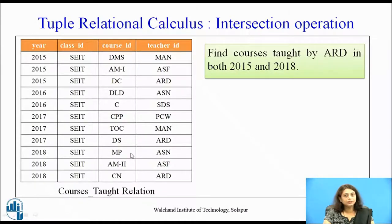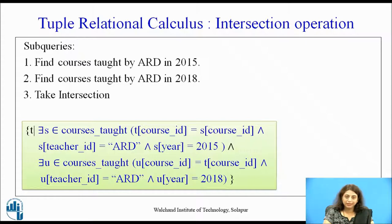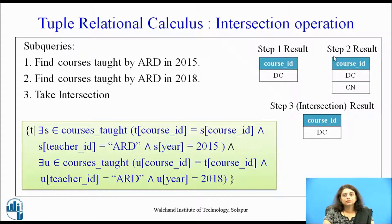Now for the query: find courses taught by ARD in both 2015 and 2018. We need the intersection operation. The queries remain the same, but 'or' (∨) is replaced by 'and' (∧) — we want courses of 2015 AND 2018. The intersection result gives only DC.